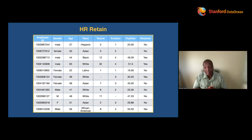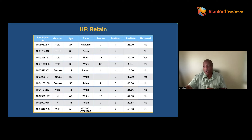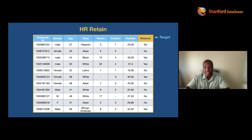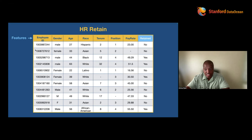A manager might ask, am I going to lose any of my people? So we want a model that can predict that. The machine says, what question are you asking? You say, we want to predict whether someone would be retained or not — that's the target variable. The machine says, do you have examples? Yes — in the past, this person wasn't retained, this person was. Machine, can you see the pattern? That's your job.